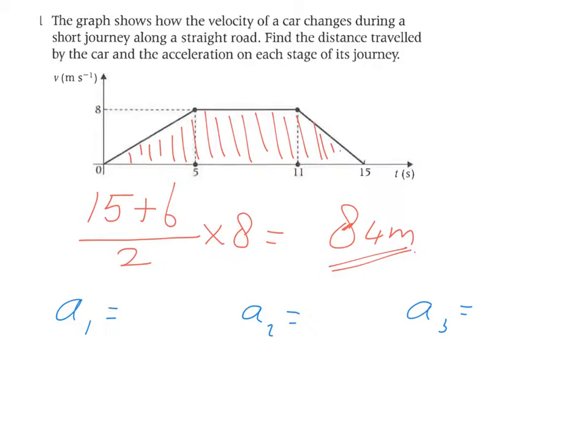So dy over dx. So 8, the change in speed, over the time taken, 5. So 8 over 5, and you can simplify that to 1.6 if you like, or 1 and 3/5. The unit is meters per second squared.